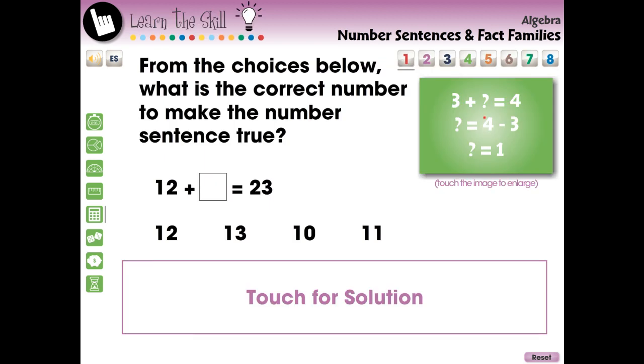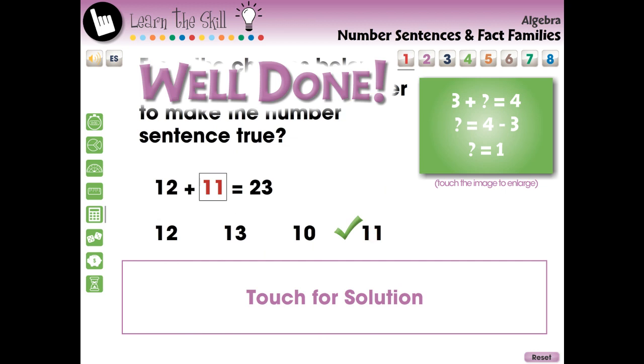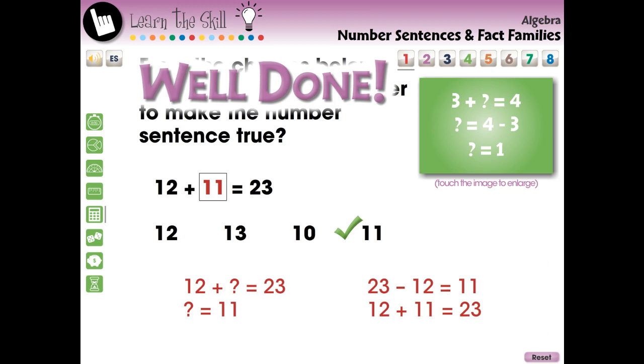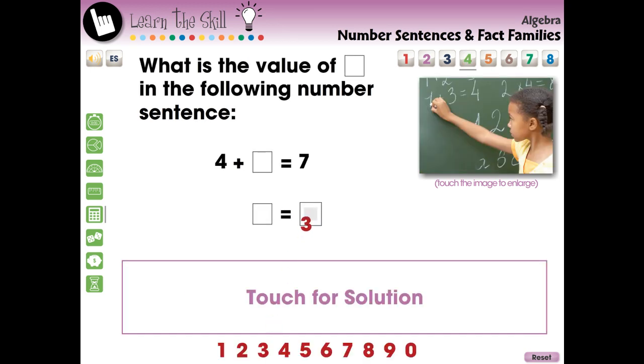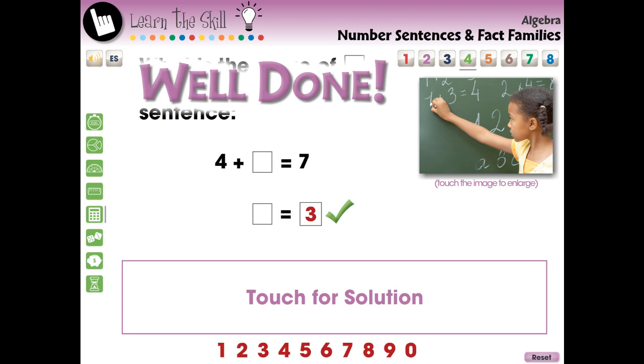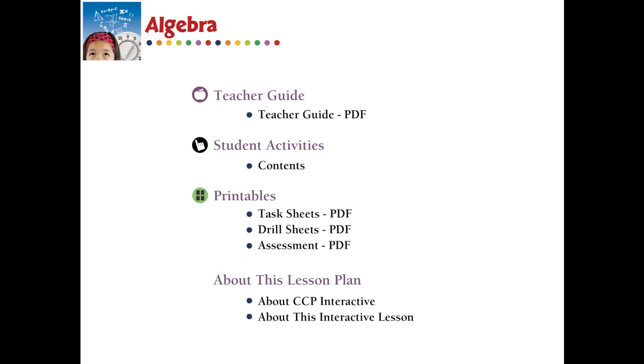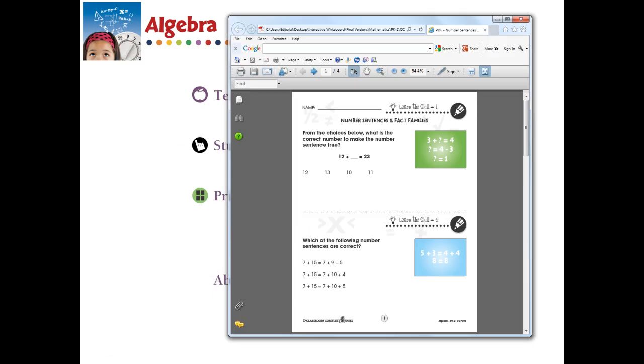The Learn the Skills section contains eight screen pages of real-world task problems. These questions include a touch-for-solution option to give a step-by-step of how the answer is reached. These questions are delivered in the form of fill-in-the-blank and touch questions. Printable PDF versions of the task questions are available at the menu screen.